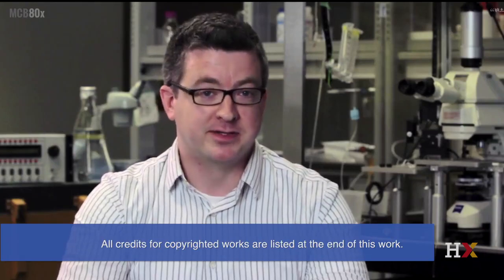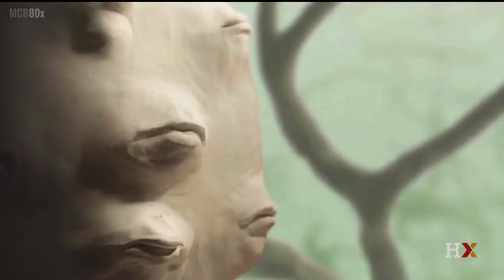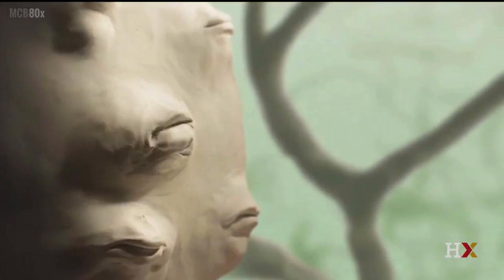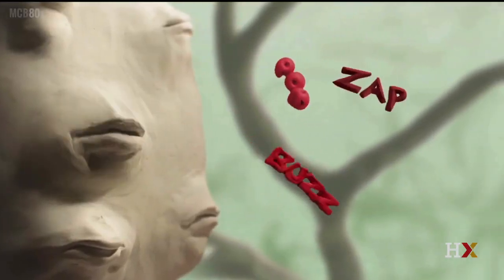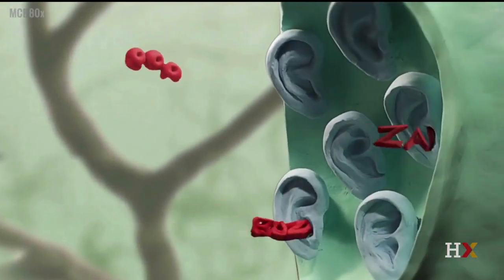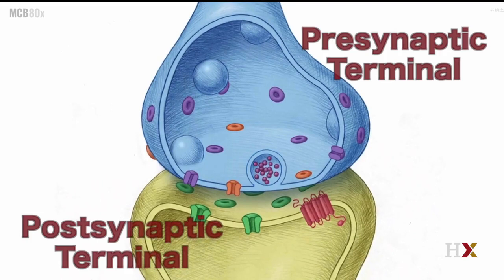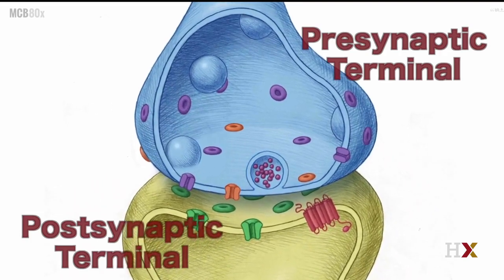So how does the cell take an electrical signal, the action potential, and translate it into a chemical signal? There's quite a bit of molecular complexity required to enable the speed and precision of vesicle release of neurotransmitters into the synapse. Over the next few segments, we'll go through the presynaptic machinery of chemical release.